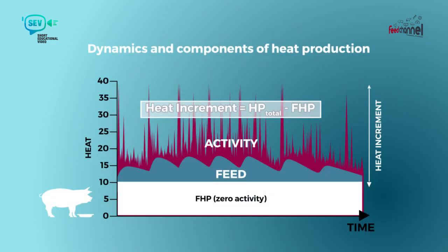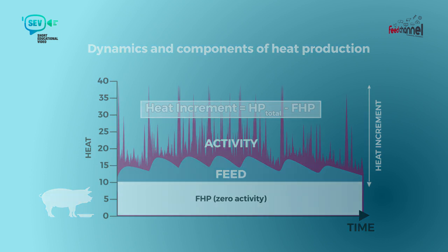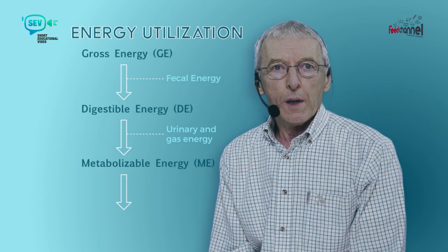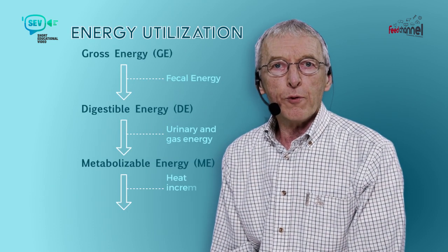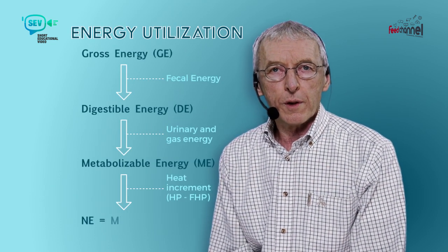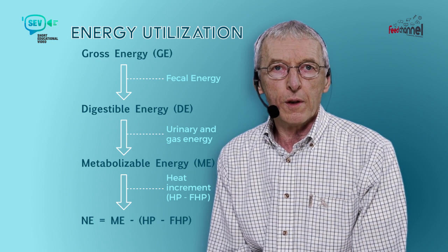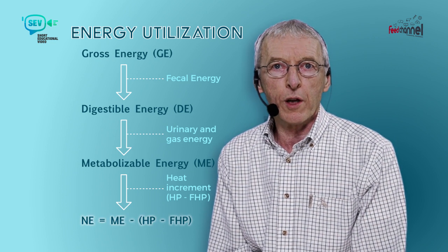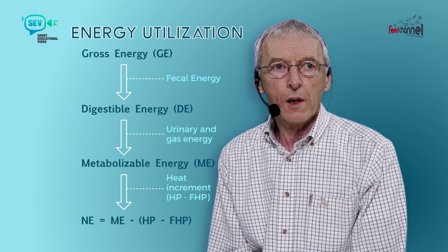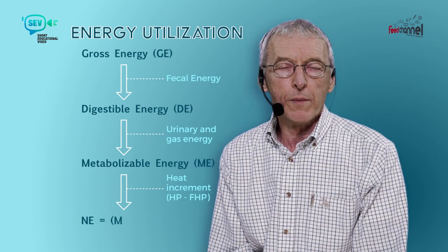Heat increment, which is the most important parameter we are looking for, is then equal to total heat production minus fasting production. If we include this heat increment value — heat production minus fasting production — in our previous diagram,